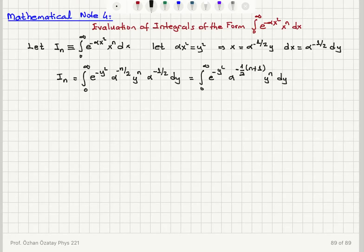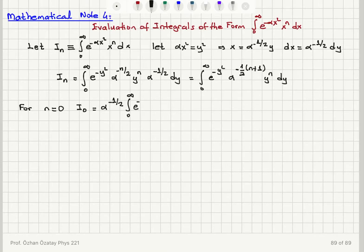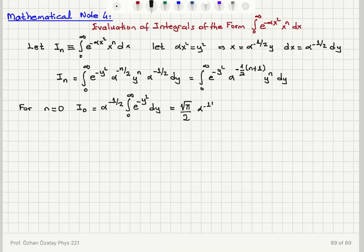For n equal to 0, I sub 0 is going to be equal to alpha to the power minus 1/2 times the integral from 0 to infinity of e to the minus y squared dy. This is the integral of a Gaussian whose answer I know. If it's minus infinity to plus infinity the answer is square root pi. From 0 to infinity it's square root pi over 2. So the answer is 1/2 times square root of pi over alpha, or equivalently 1/2 square root pi times alpha to the minus 1/2.